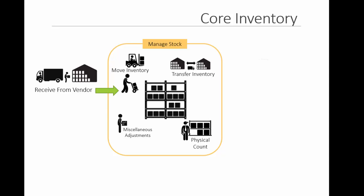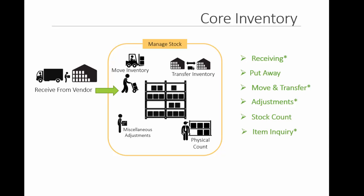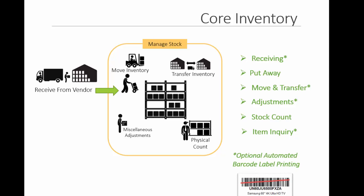Some of the key features include receiving, put away, bin moves and site transfers, adjustments, stock counts, and inventory inquiry screens. Most of these transactions include the ability to automatically print barcode item labels for efficient data capture throughout your process.